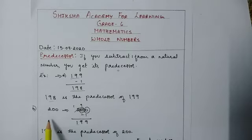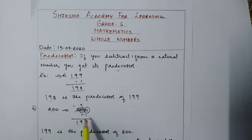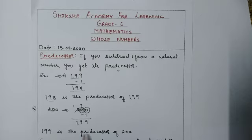Let us consider one more example: 200. To find the predecessor of this number we subtract 1, so we will get 199. So 199 is the predecessor of 200.